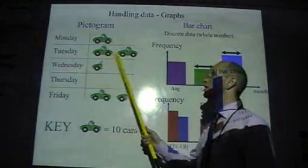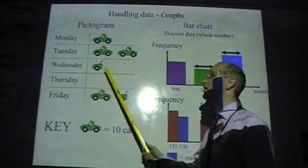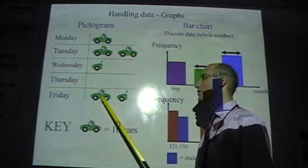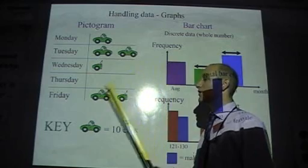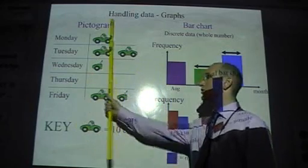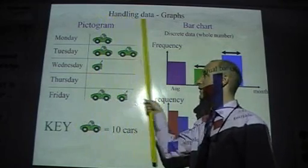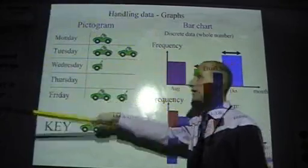So on Tuesday there were 20 cars. On Monday, 10 cars. Wednesday, five cars. Friday, 10 and 5, 15 cars. So, pictogram. Make sure it's got a key. Make sure your pictures are in neat vertical lines and horizontal lines.